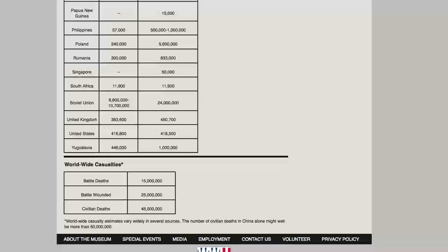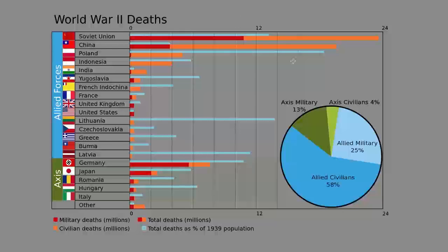Now let me switch to a different page here. This is a Wikimedia data visualization. Data visualization is when you take numbers — like the casualty figures we just looked at — and put them in some sort of visual or graphical format that allows you to better understand what the numbers really mean. This is a bar graph format for World War II deaths.